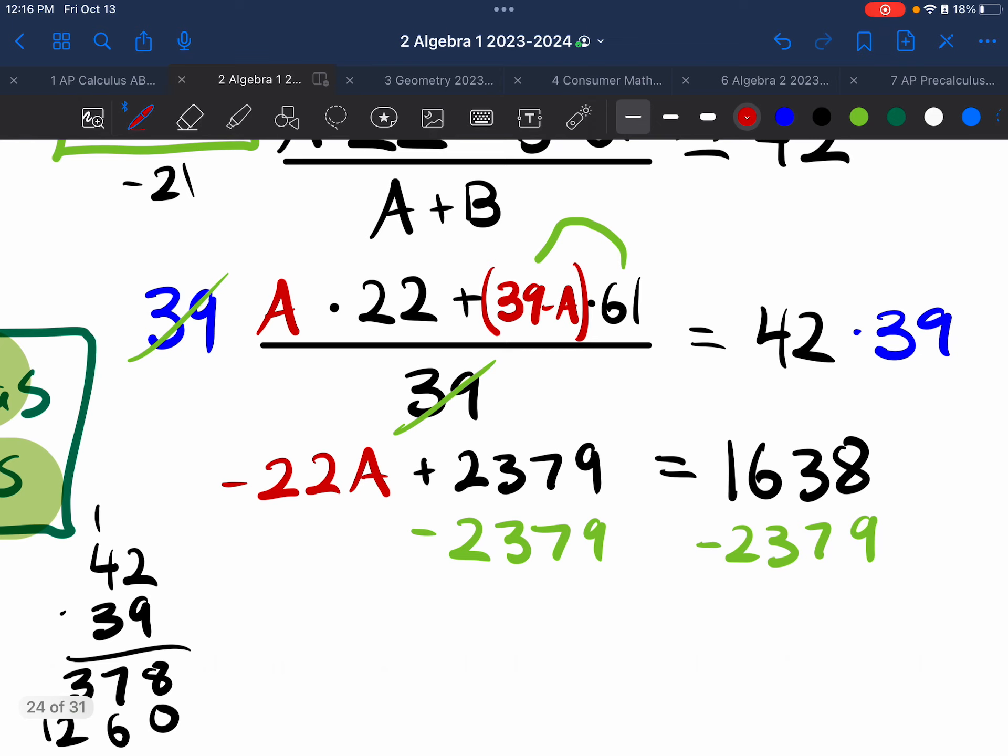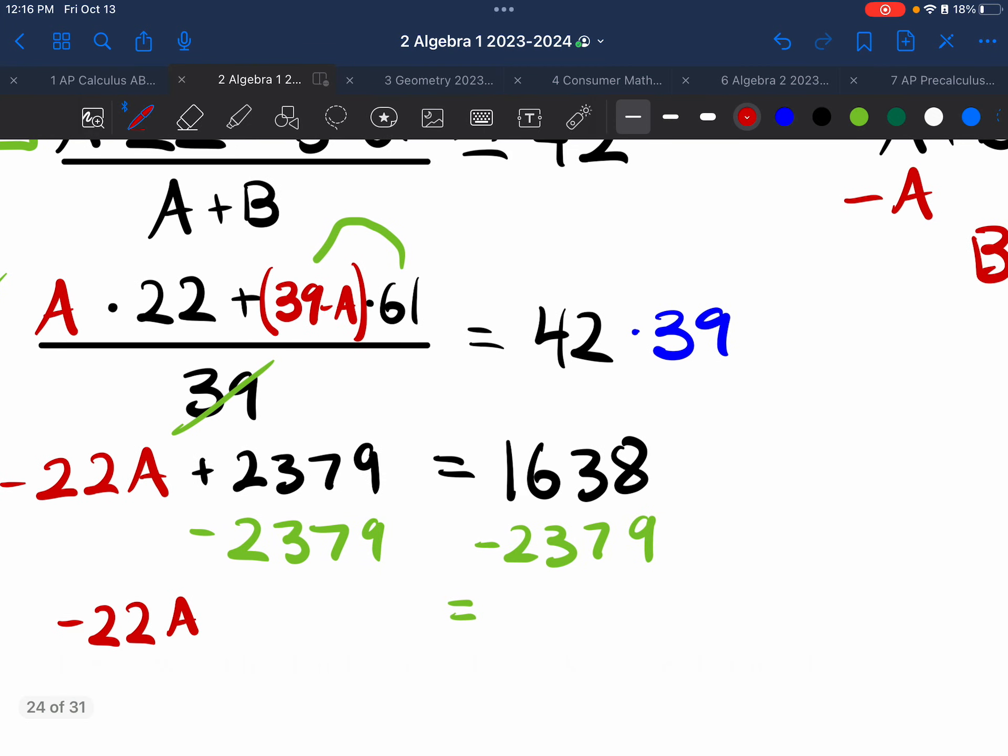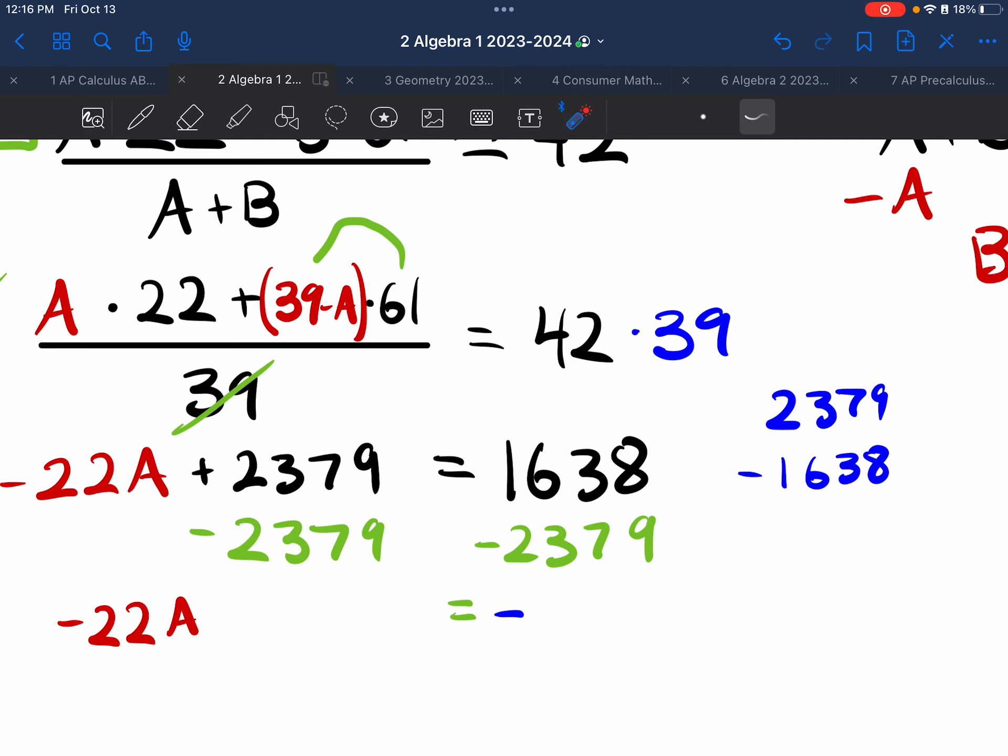So if I continue on this problem, I've got something gross over there. On the left-hand side, I still have my negative 22A. On my right-hand side over here, what have I got? Well, I'm always going to do big minus small. So essentially I'm doing 2, 3, 7, 9 minus the small, 1, 6, 3, 8. And I know that I always take the sign of the larger. It's the larger. So I know my answer is negative.